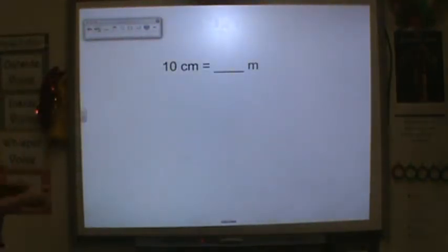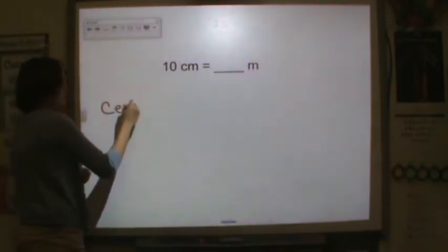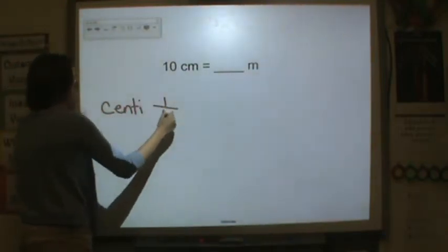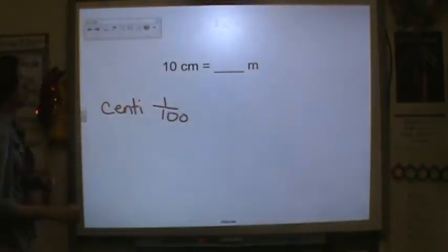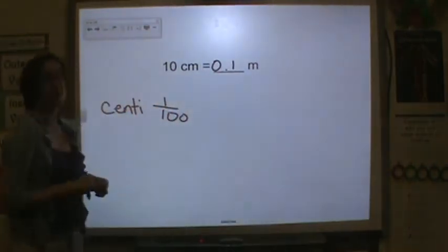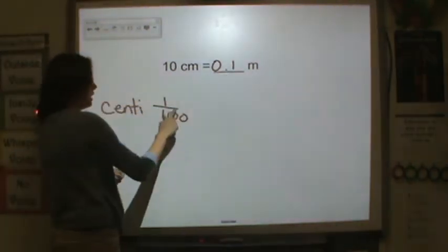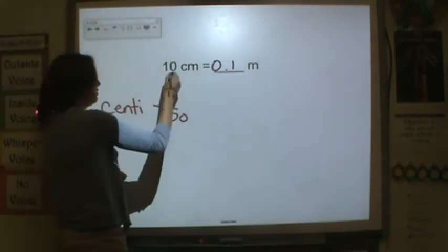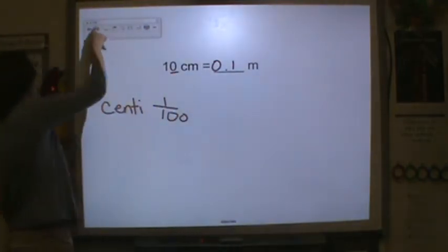Centimeter to meter. We know that centi means one hundredth. So ten centimeters, that's one hundredth of a meter. So ten centimeters is going to be equal to one tenth of a meter, because it's one hundredth, and you've got a ten here, so it becomes a tenth.